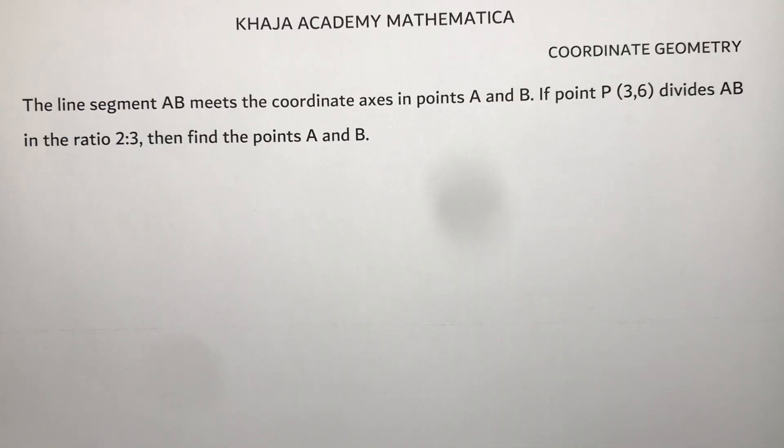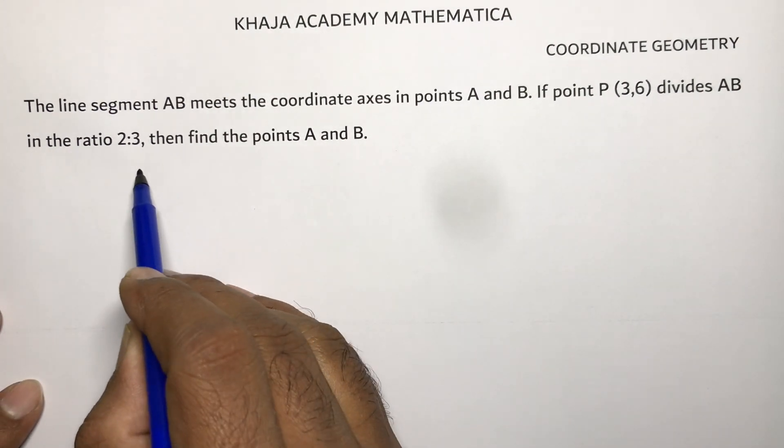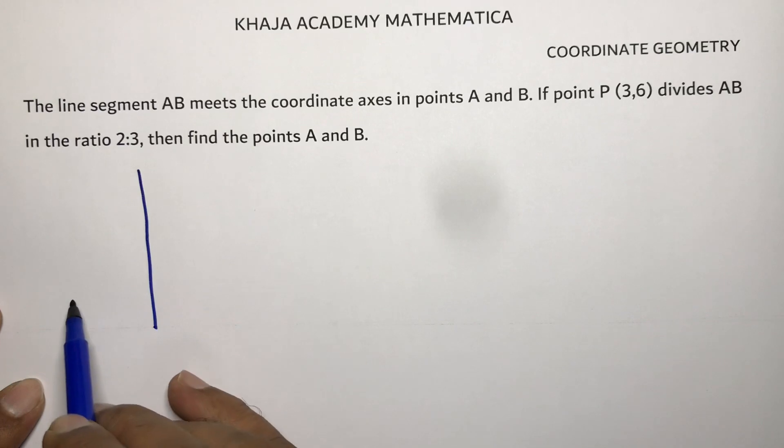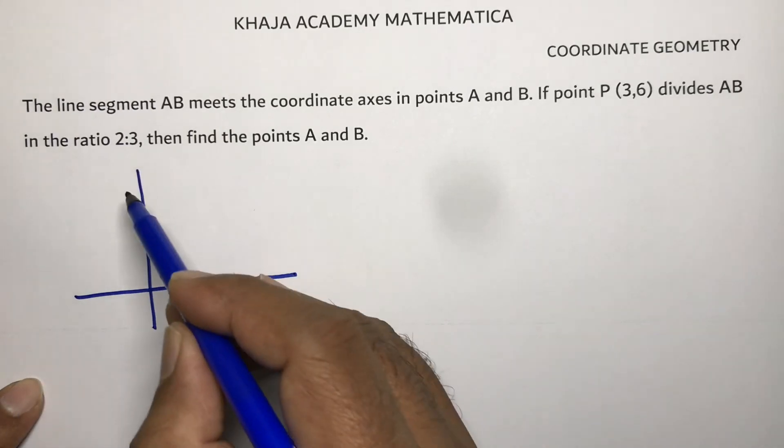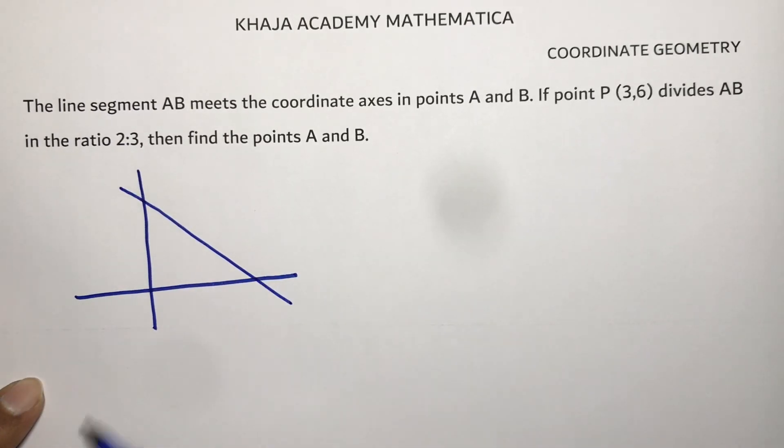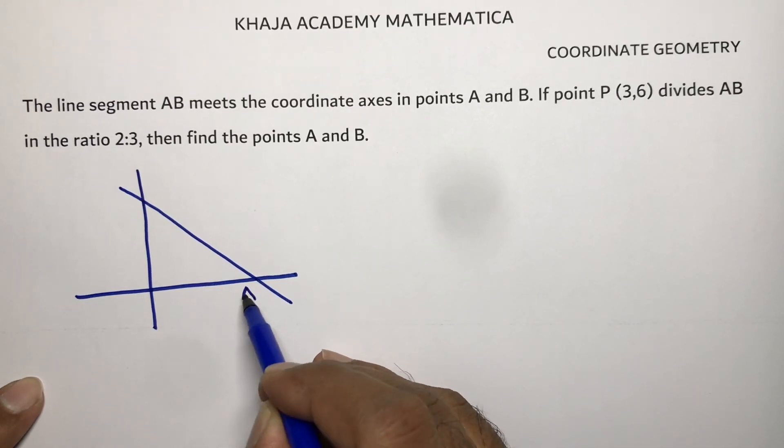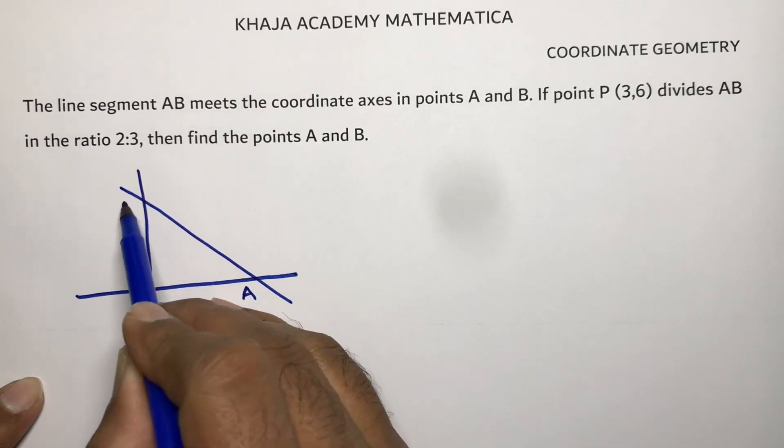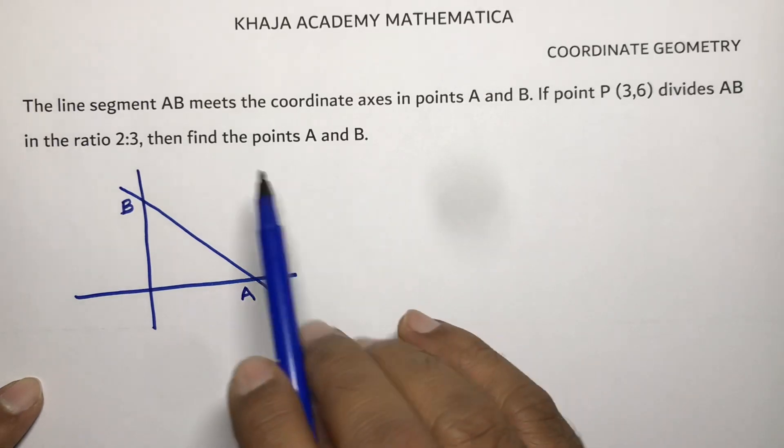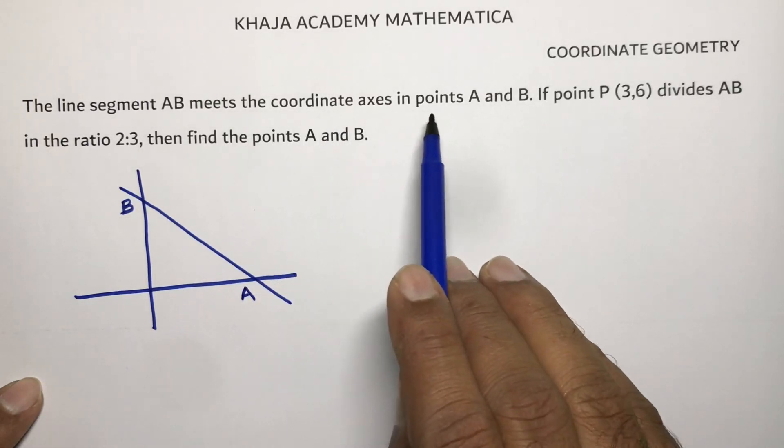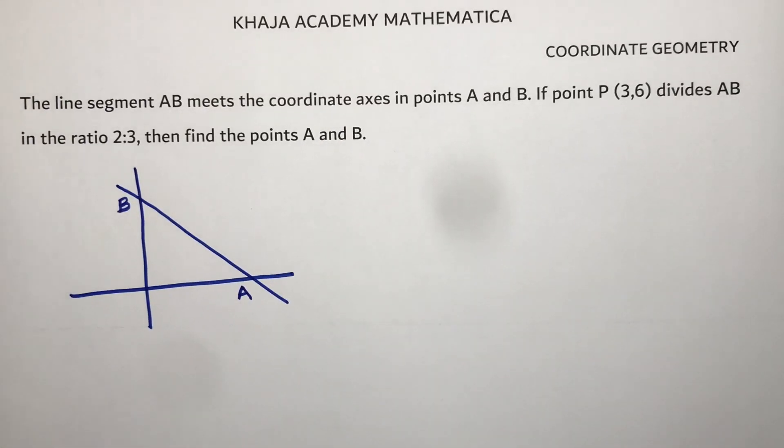The line segment AB meets the coordinate axes in points A and B. Here I'll consider this point as A and this point as B. So the line segment AB meets the coordinate axes in points A and B. If point P...